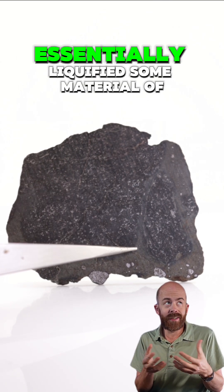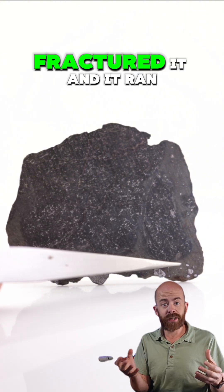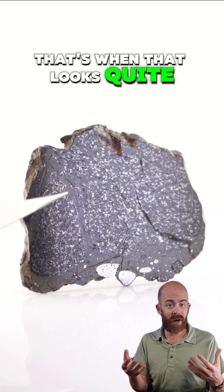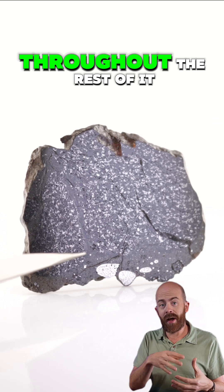That high heat event essentially liquefied some material of the stone, fractured it, and it ran into it and solidified, and that's what you see there. That's when that looks quite a bit different than the more brecciated matrix that we see throughout the rest of it.